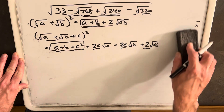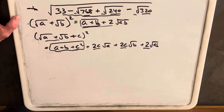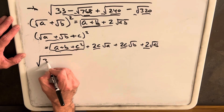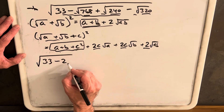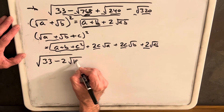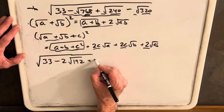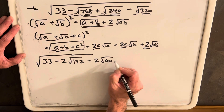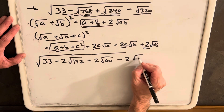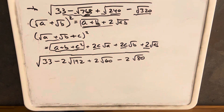If you have four times anything in a radical, you can rewrite it as two times that thing, just taking the square root of four. So our first step is to rewrite the original expression and take that four out of each piece. We'll have the square root of 33 minus 2 times the square root of 192, plus 2 times the square root of 60, minus 2 times the square root of 80. That's a little better — at least we have smaller numbers.